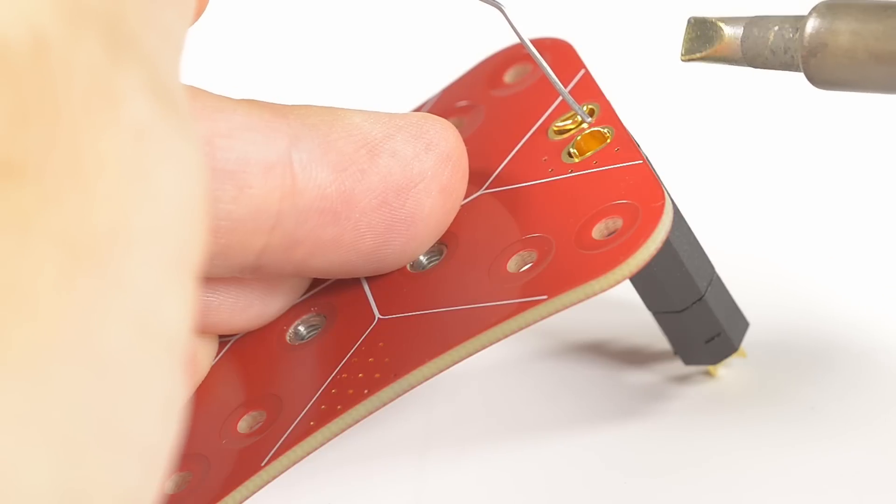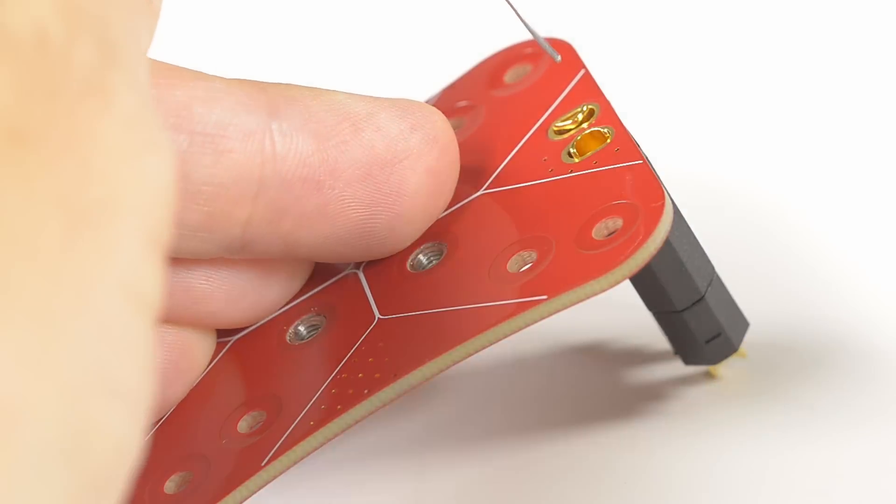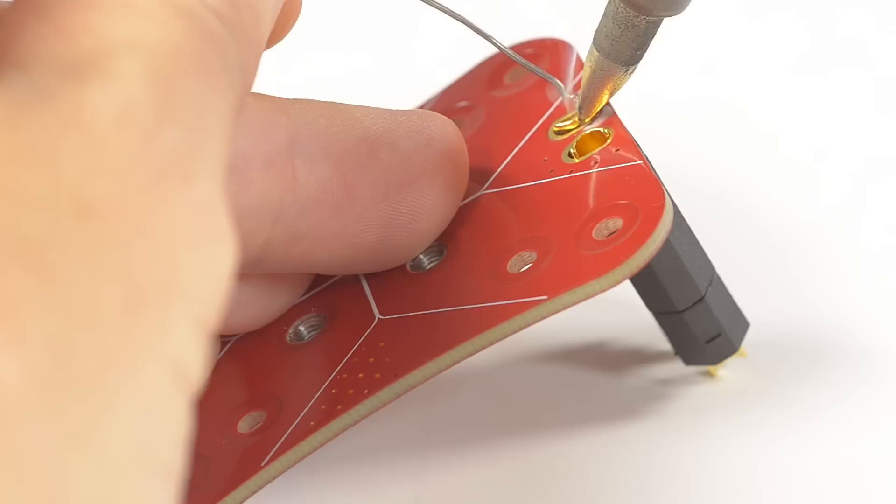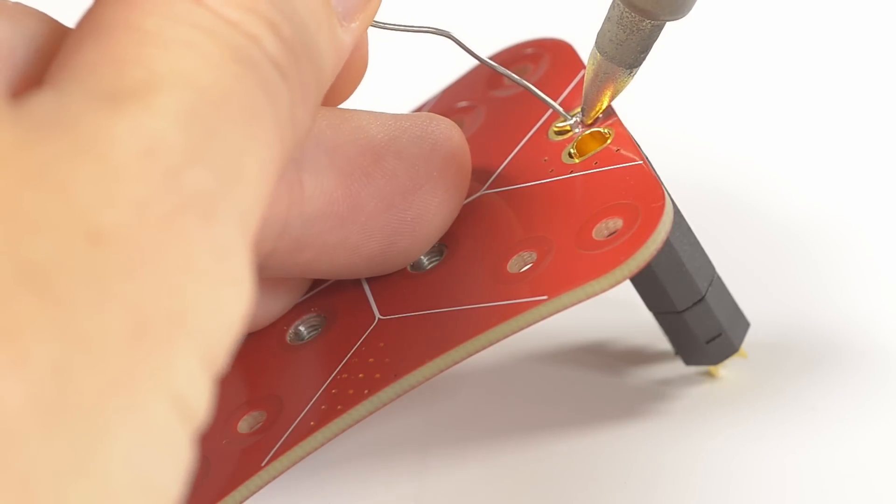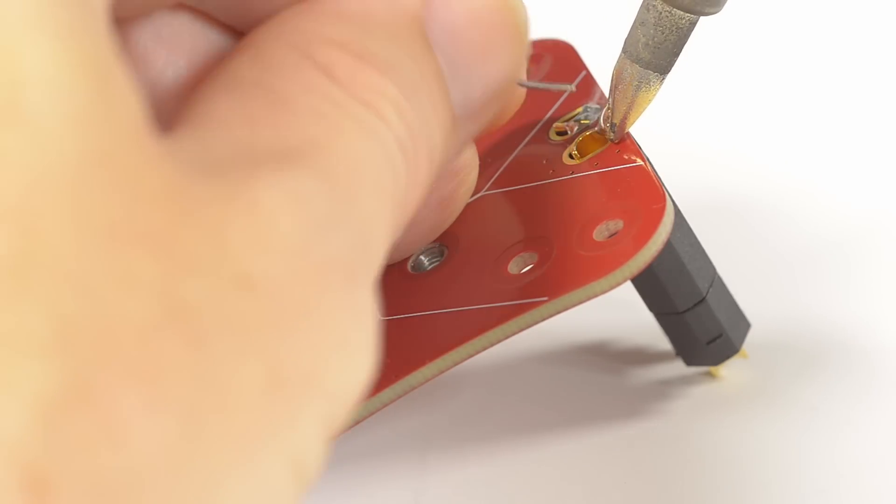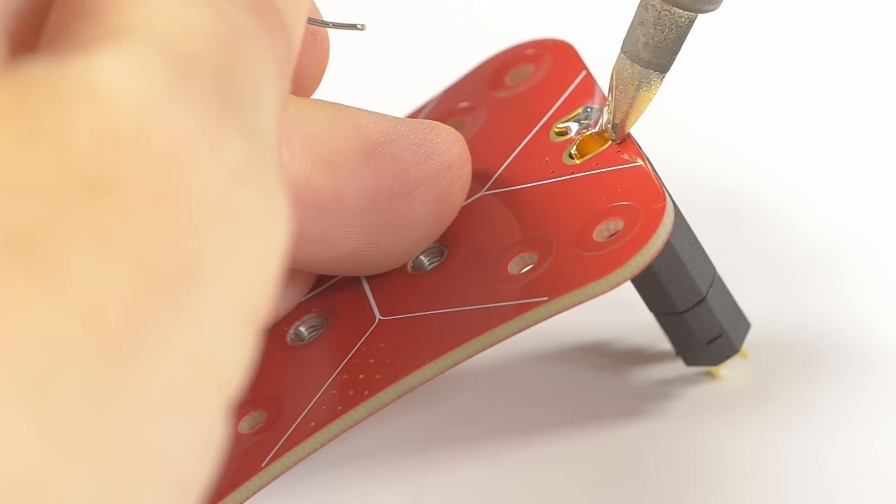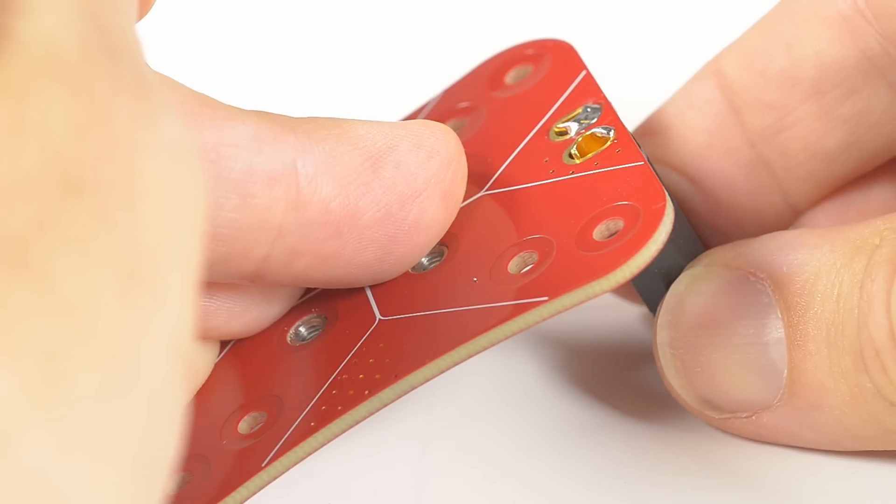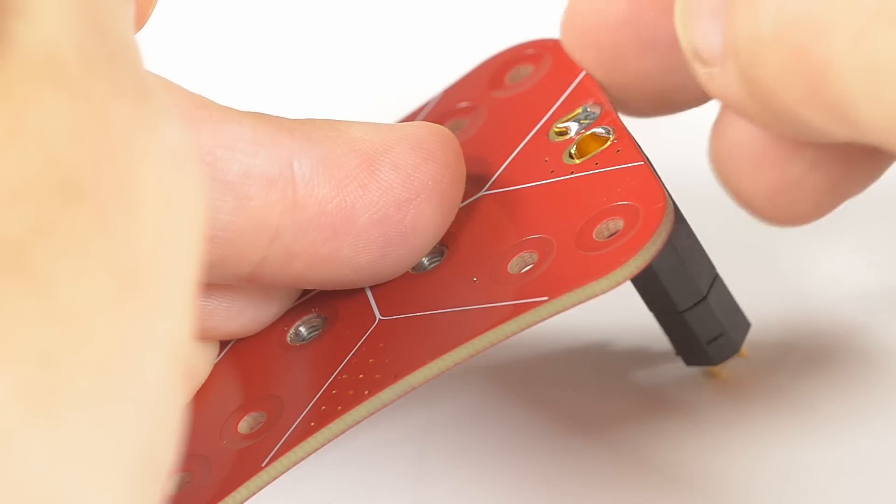Now with the wide chiseled tip just tack both connectors to the PDB so they hold in place while the other is properly soldered. Press down on the PDB firmly the whole time to properly seat the XT60 flush against the PDB.